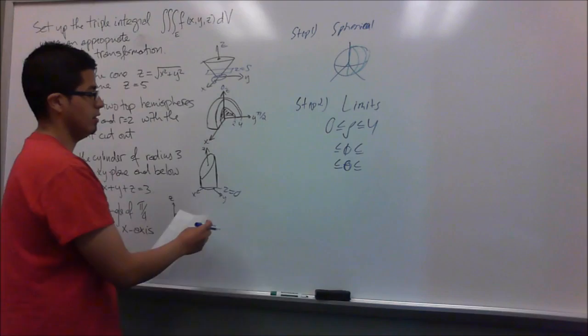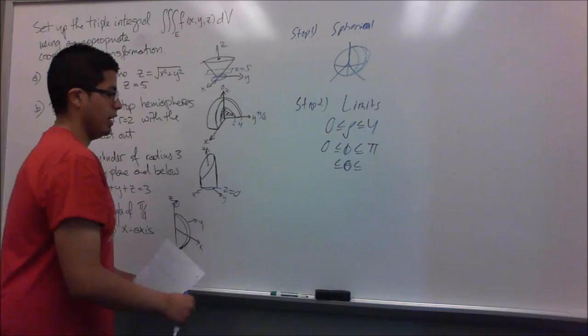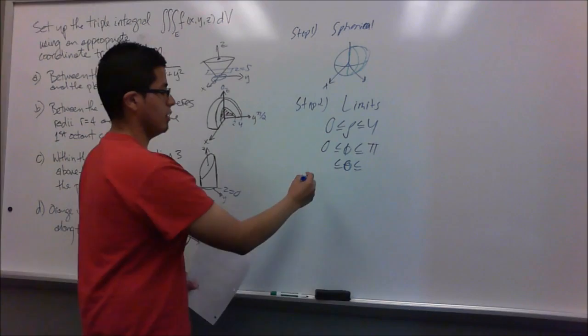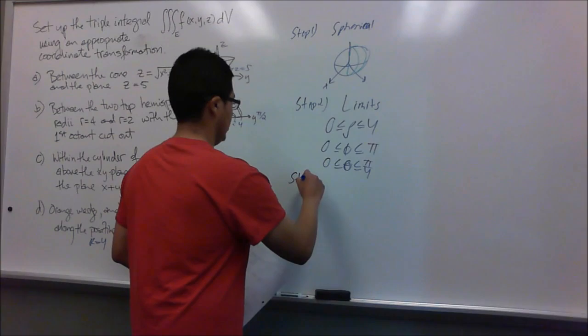For phi, notice that the wedge goes from the positive z-axis all the way down. The positive z-axis starts at phi equals 0, and it goes all the way down, so phi goes from 0 to pi. For theta, it represents the sweep in the xy-plane, and in this case it goes from 0 to pi over 4, as given.